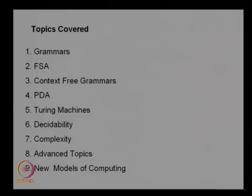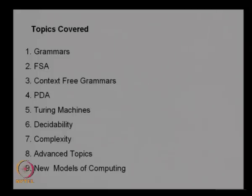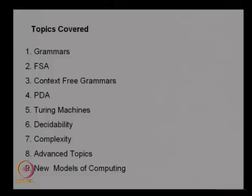The topics covered in this course are as follows. First we shall start with grammars — the four types of grammars, some examples, ambiguity and so on. Next we consider the finite state automaton, which is the simplest machine model. Then we go on to context free grammars, studying in detail some of their properties. Next we study the pushdown automaton, which is the machine model for context free grammars. Then we go on to Turing machines and study decidability properties and complexity. We shall also cover advanced topics like grammar systems, regular rewriting, L-systems, and finally two new models of computation: DNA computing and membrane computing.